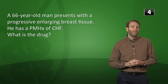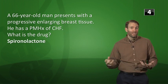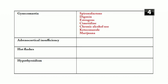Endocrine vignette: a 66-year-old man with CHF presents with progressively enlarging breast tissue — gynecomastia. Likely on spironolactone. Other causes include digoxin, estrogens, cimetidine, chronic alcohol use, ketoconazole, and marijuana. Tertiary adrenal insufficiency can result from corticosteroid withdrawal in patients dependent on exogenous steroids, such as those with autoimmune disease, severe asthma, or rheumatologic diseases. Hot flashes can be caused by tamoxifen and clomiphene — both SERMs (selective estrogen receptor modulators).